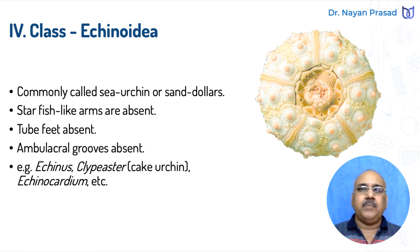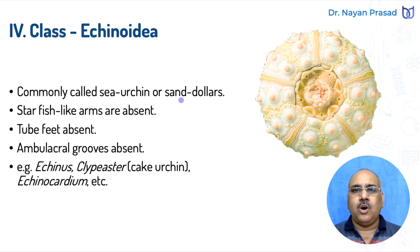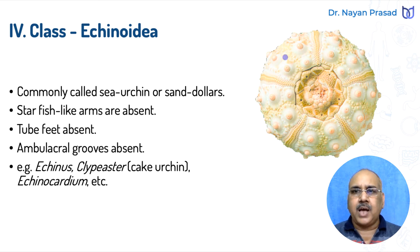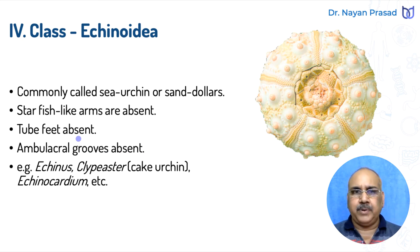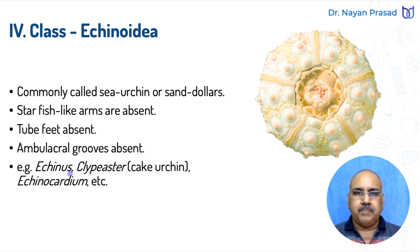Class Echinoidea: members are commonly called sea urchin or sand dollars. Starfish-like arms are absent. We can see five lines on the central disc. Ambulacral grooves are absent, but tube feet are present and help in locomotion. Common examples are Echinus, Clypeaster (also called cake urchin), Echinocardium, etc.